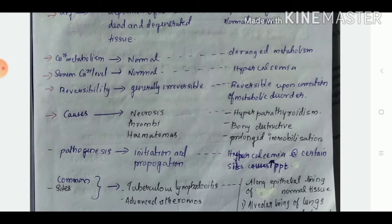For metastatic, it is hyperparathyroidism, bony destruction, and prolonged immobilization. The pathogenesis of dystrophic involves initiation and propagation.